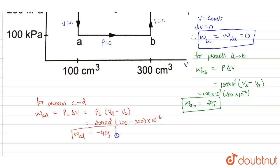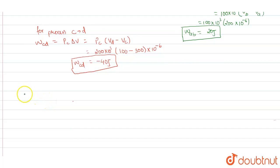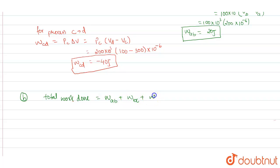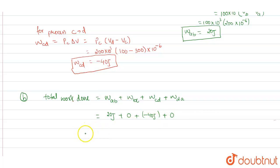We have calculated the work done in all processes: AB = 20 J, BC = 0 J, CD = -40 J, DA = 0 J. The total work done by the gas in the entire cycle is 20 + 0 + (-40) + 0 = minus 20 joules.